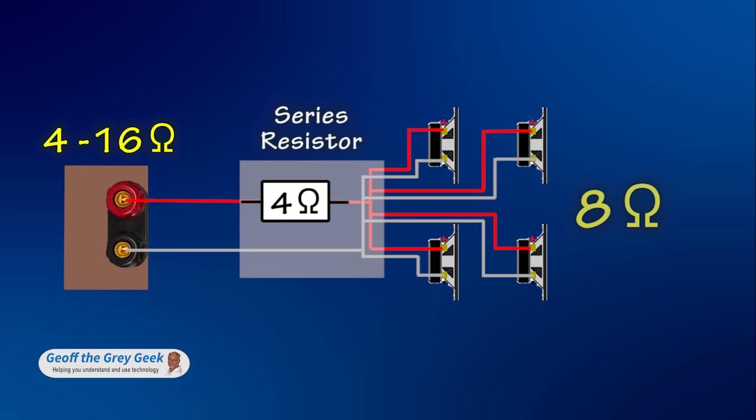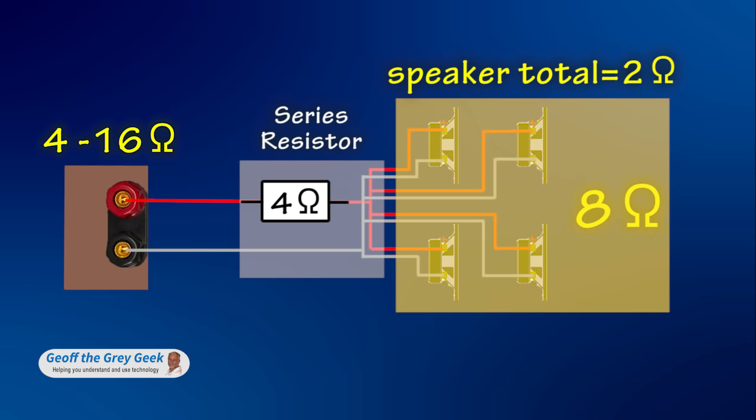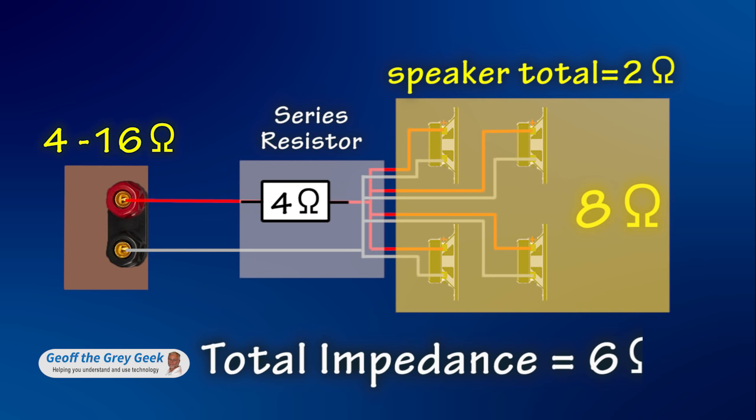If you have four 8 ohm speakers in parallel, the speaker impedance is 2 ohms. 4 ohms in series with 2 ohms gives a total load impedance of 6 ohms, which is also good for the amp.